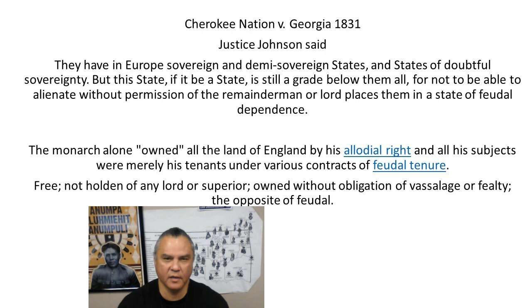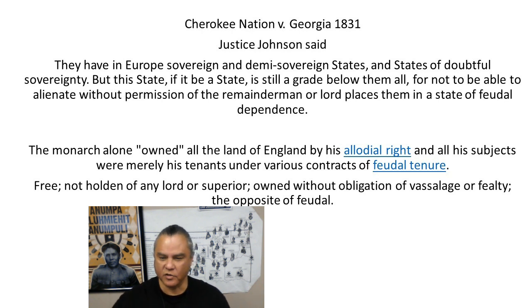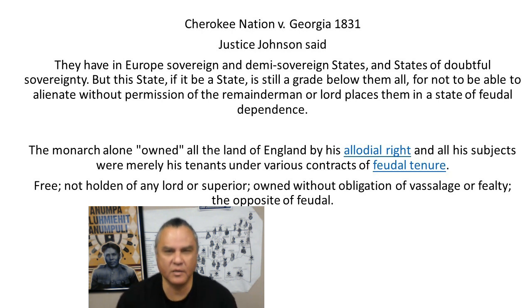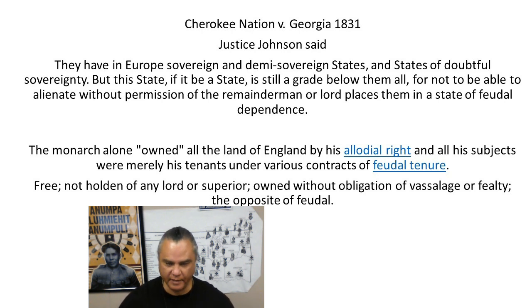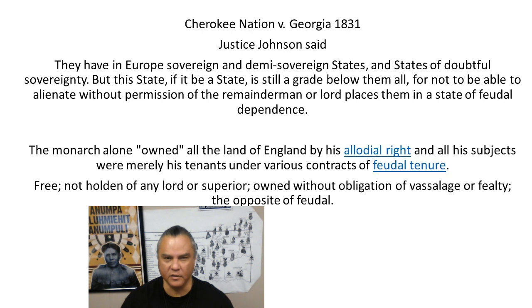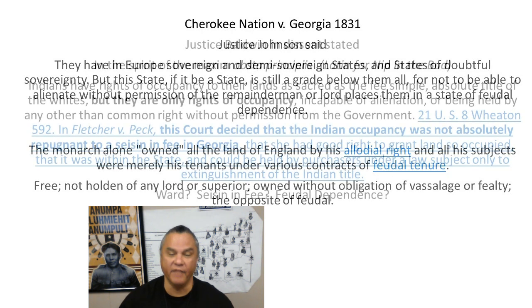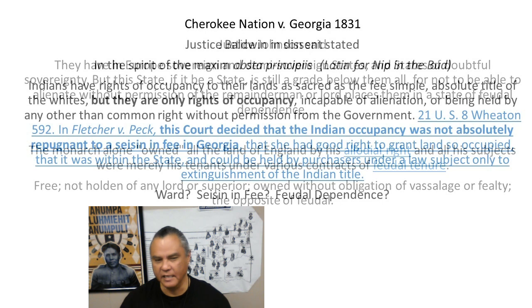This is where the history of Oklahoma tribes becomes very interesting. We start hearing terms like feudal. What does that mean? Feudalism — where did that come from? It has something to do with what's known as allodial right to title, which means the monarch owns everything. If the land is allodial title, then it's free — not held to any lord or superior, owned without obligation of vassalage or fealty. It's the opposite of feudalism.